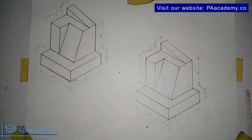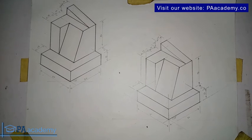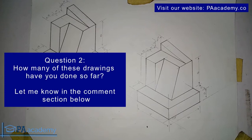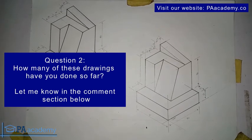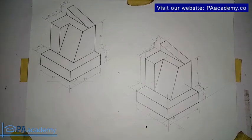One question for you before we go to the next drawing: so far we've looked at 20 drawings, and I want to ask how many of these drawings have you done so far? How many have you put pencil to paper to attempt? Is it 5 over 20, 2 over 20, or even 0 over 20? Let me know in video 21.